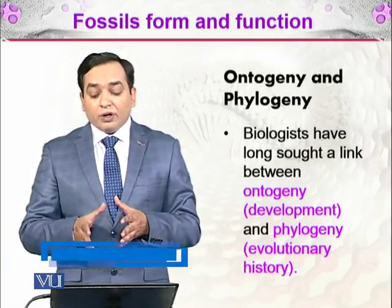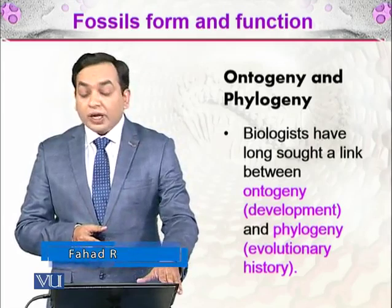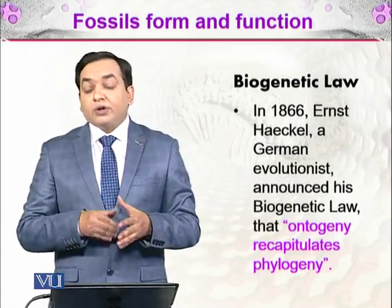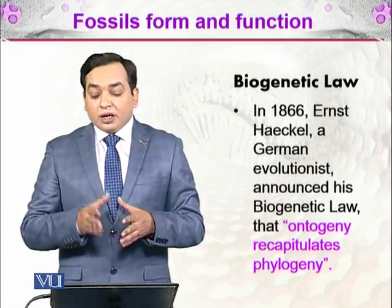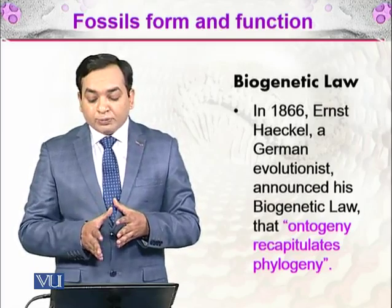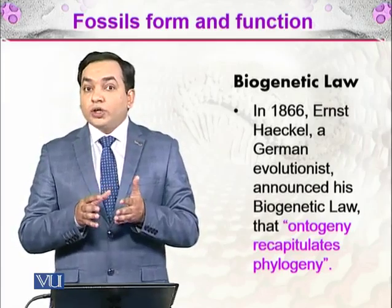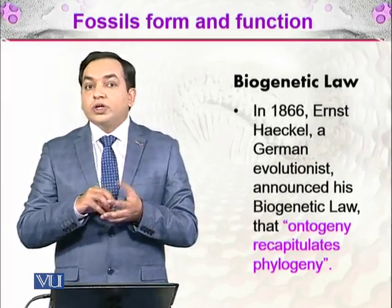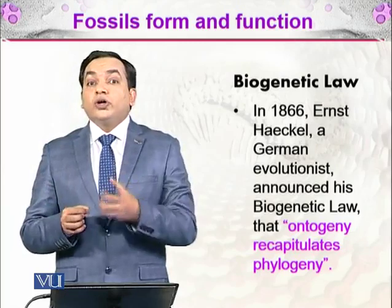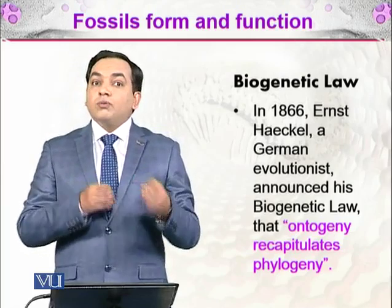Biologists have long sought a link between ontogeny, which is development, and phylogeny, which is evolutionary history. In 1866, a German evolutionist named Ernst Haeckel announced his biogenetic law, which states that ontogeny recapitulates phylogeny. This means that when a cell develops from a zygote into a complete organism, it passes through stages that somehow reflect its evolutionary history — a remarkable observation for scientists of that era.